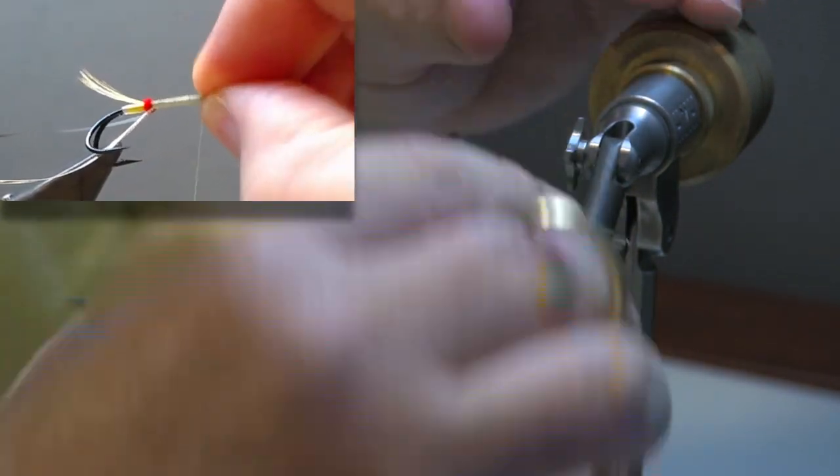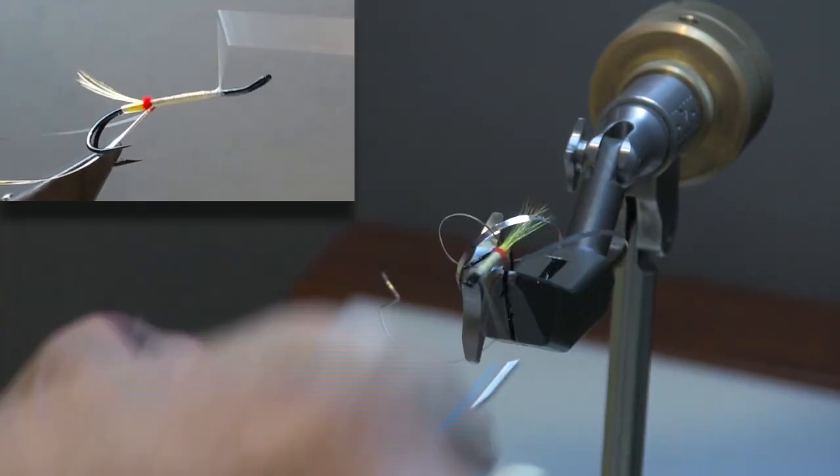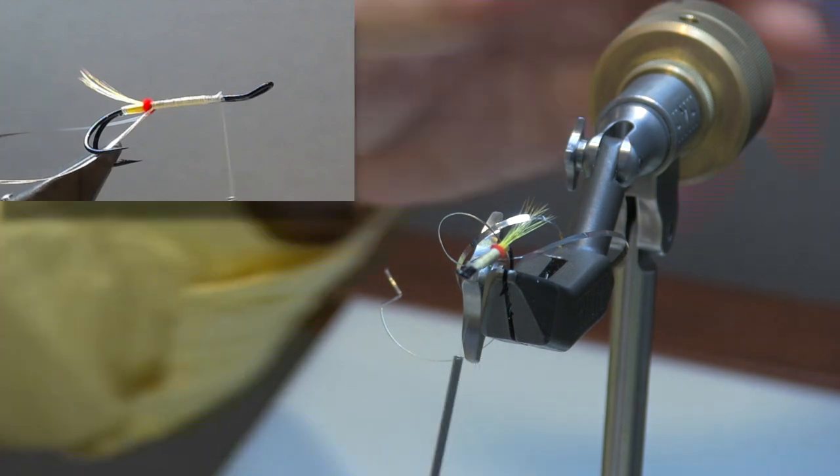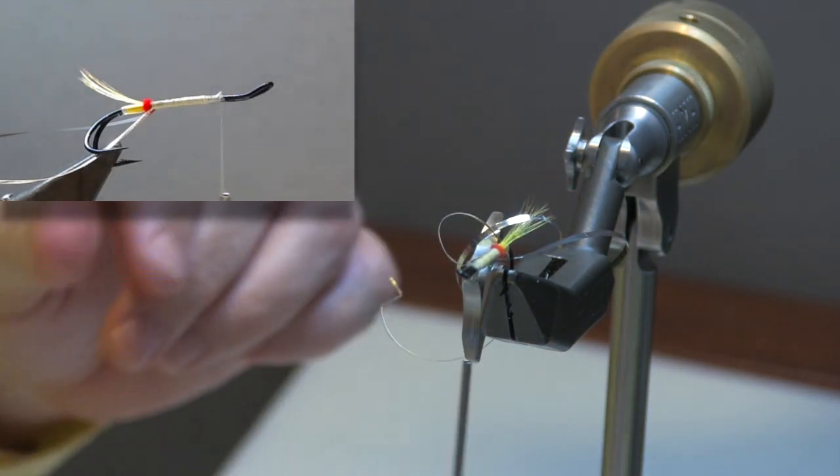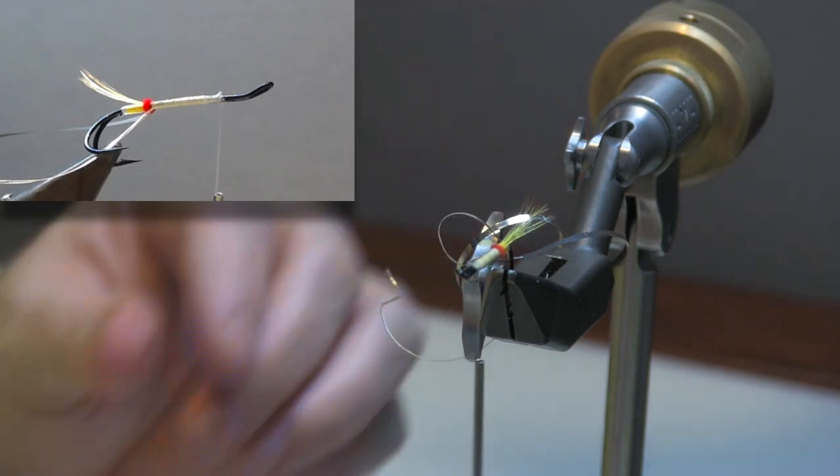This is for a fishing fly as opposed to something you're going to mount on a wall. So it doesn't have to be 100% perfect, but you do want to start to get those principles down because it will improve your tying overall.